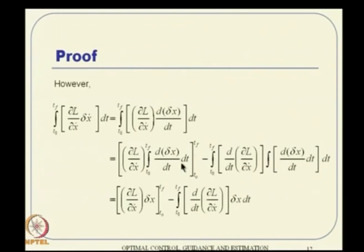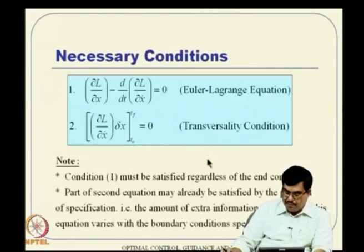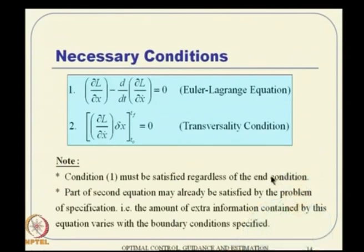The same trick holds for vector algebra as well—that is why it was worth revising. Condition one must be satisfied regardless of the boundary conditions or end conditions. But the second part of the equation may already be satisfied by the problem specification. The amount of extra information contained by the transversality equation varies with the boundary condition specified, so depending on the specified boundary condition, you extract additional information from this condition.